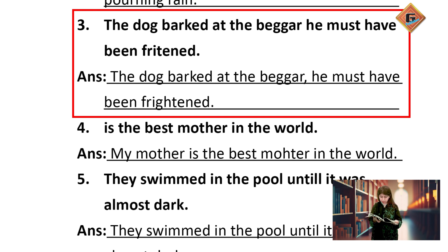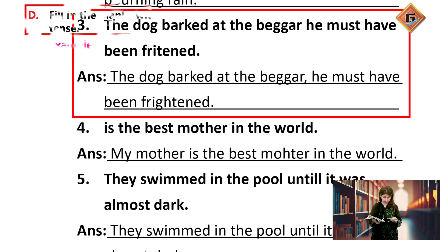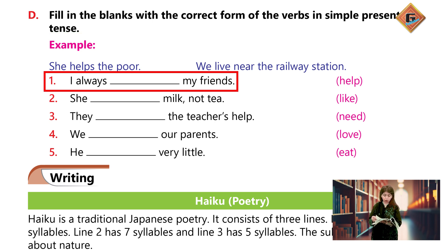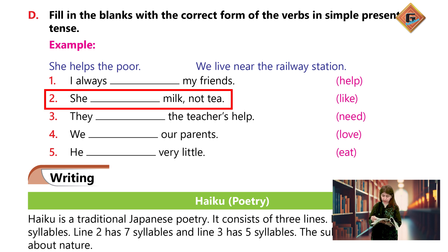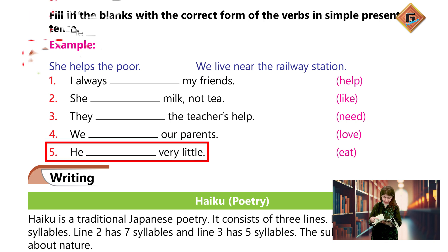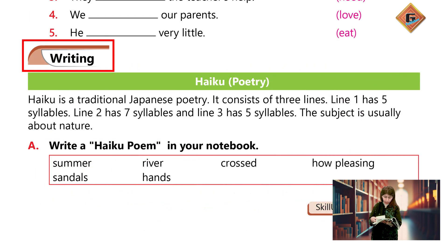'The dog barked at the beggar' — beggar ke spelling dekhe. 'He must have been frightened' — frightened ke spelling ko dekhe ga. Now fill in the blanks with the correct form of the verb in the simple present tense: I always help my friends. She likes milk, not tea. They need the teacher's help. We love our parents. He eats very little.